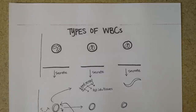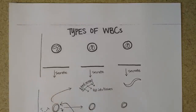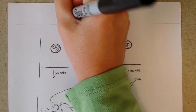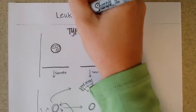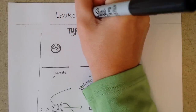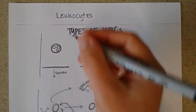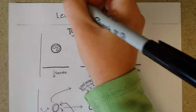This page of your notes is on types of white blood cells. I'm going to split them into three main kinds. Before I do that, I'll give you a general term for white blood cells, which is leukocytes, and that word literally means white cells.